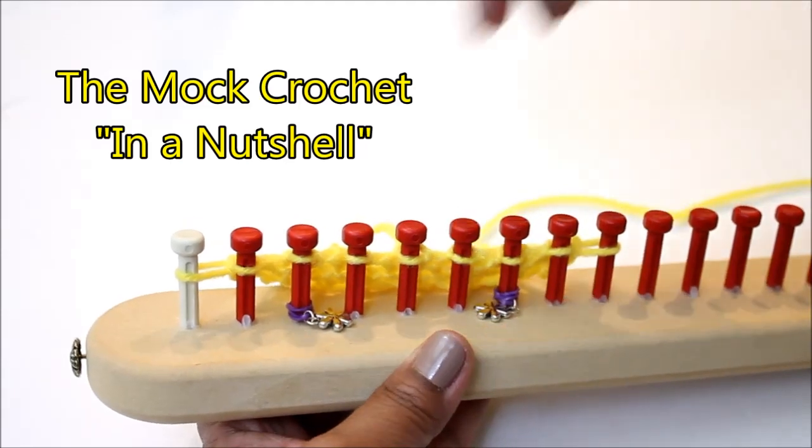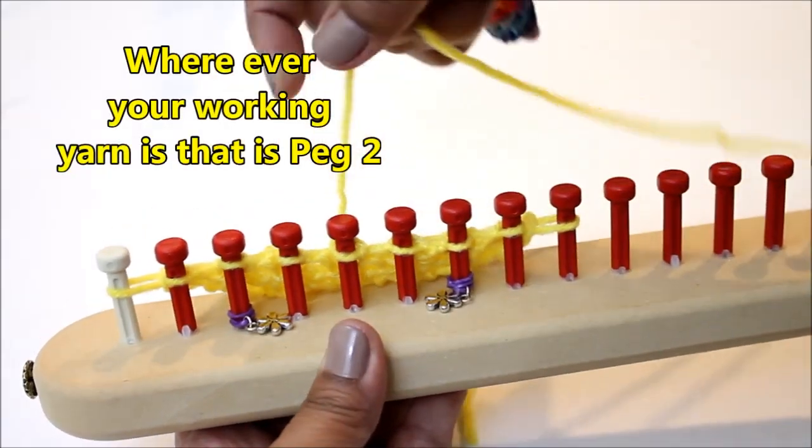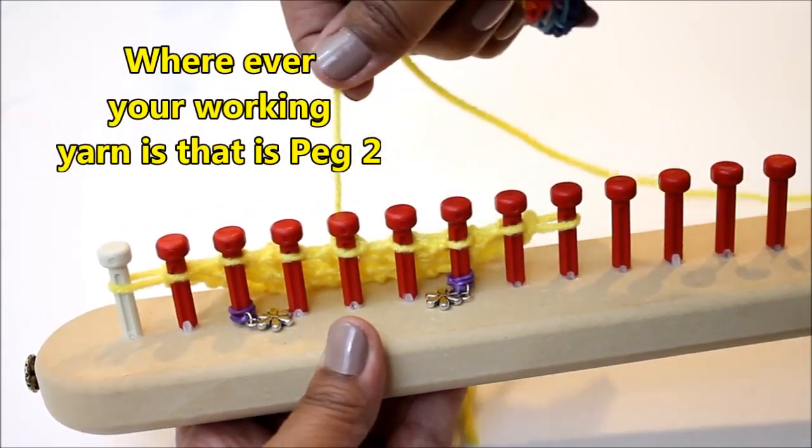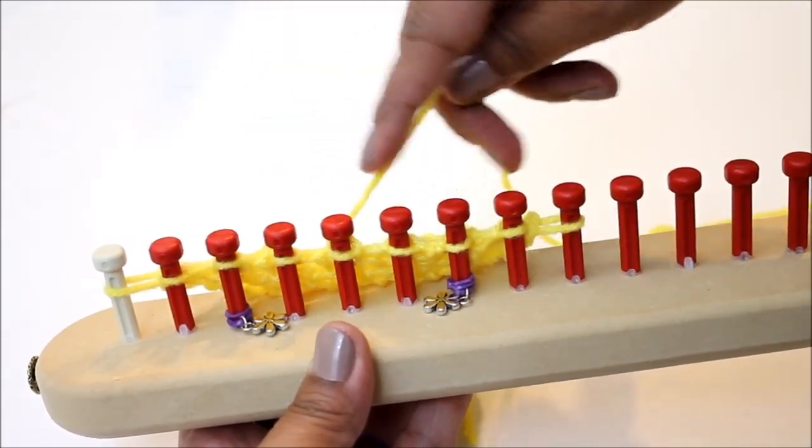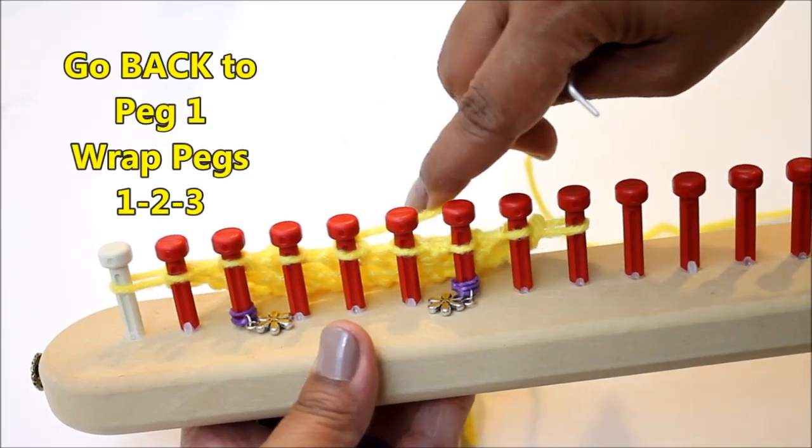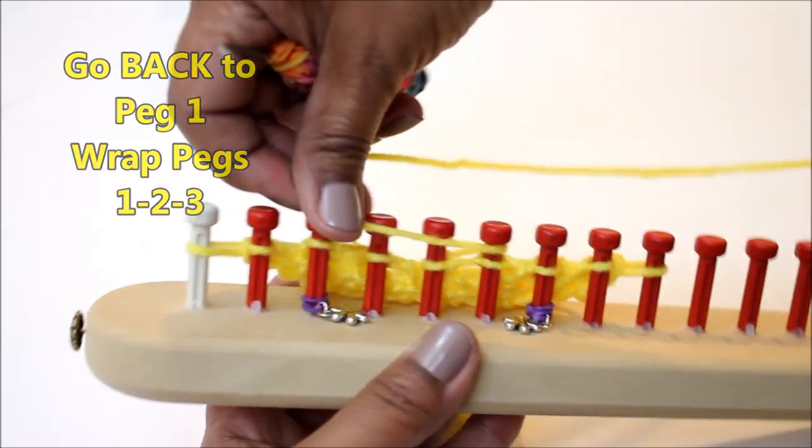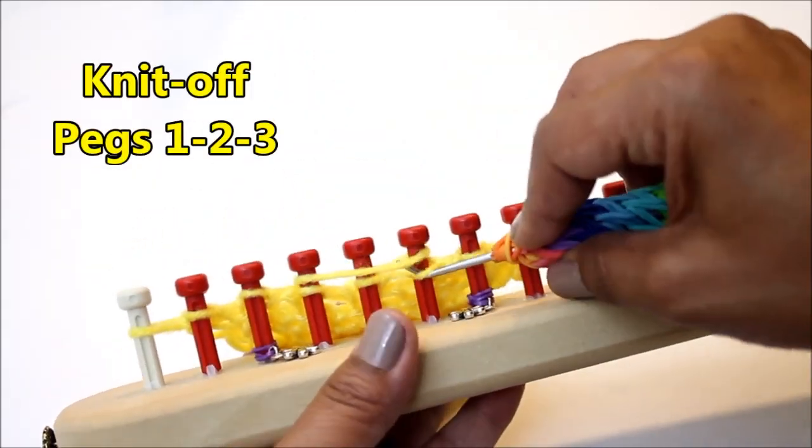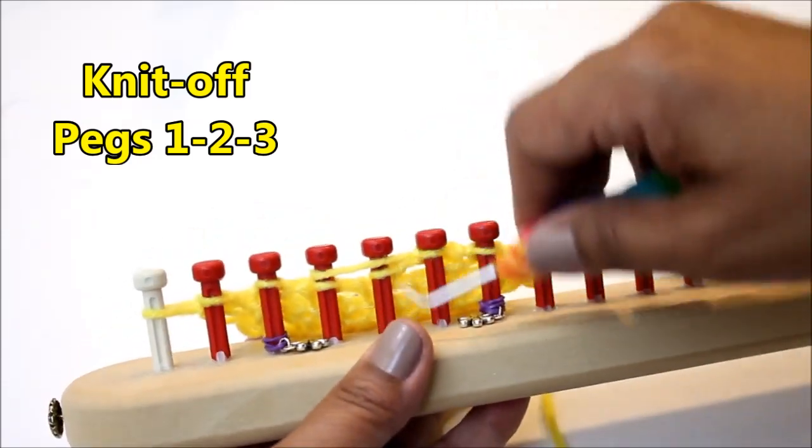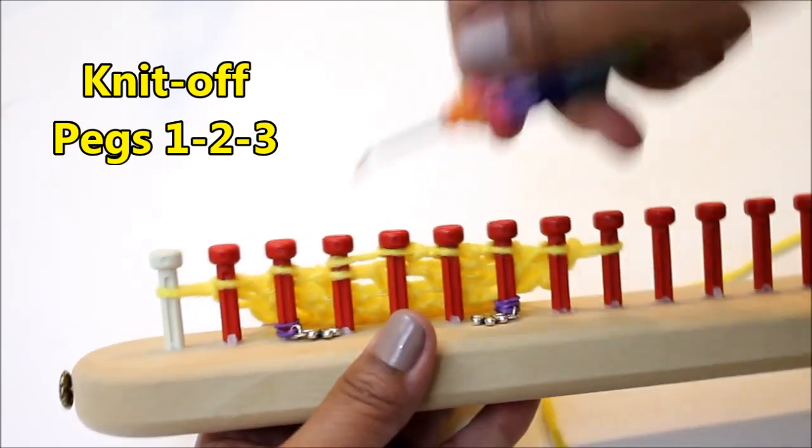The mock crochet in a nutshell. A summary. Wherever your working yarn is, that is peg two. So this is where my working yarn is, that's peg two. I need to go back to peg one and I'm going to wrap peg one, peg two and peg three and I'm going to knit off. One, two, three.